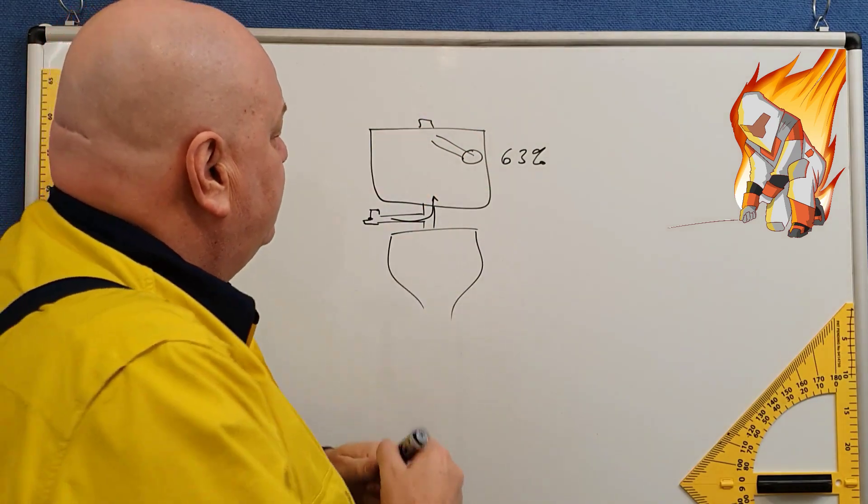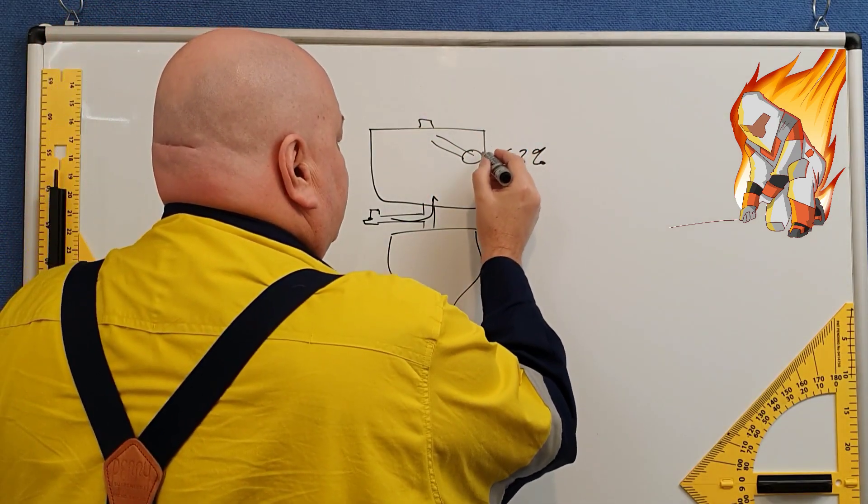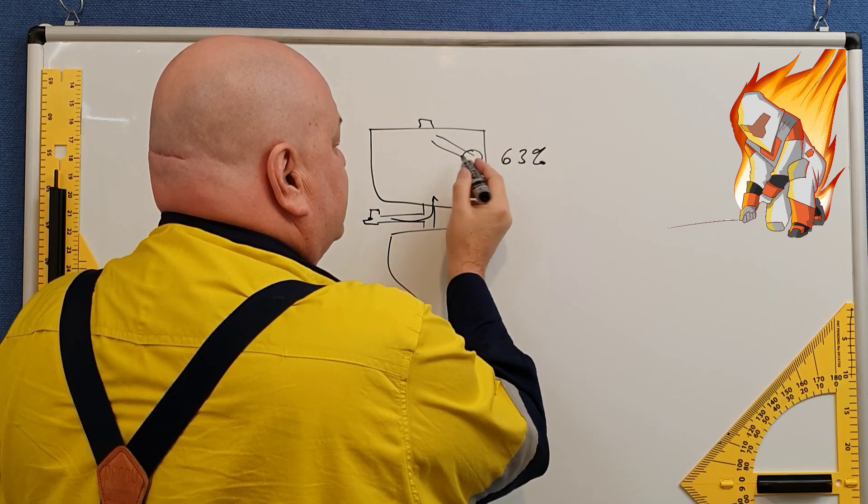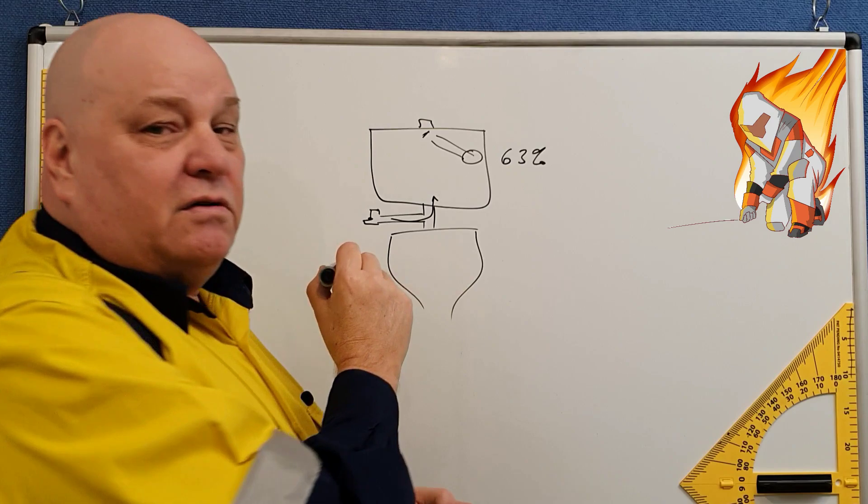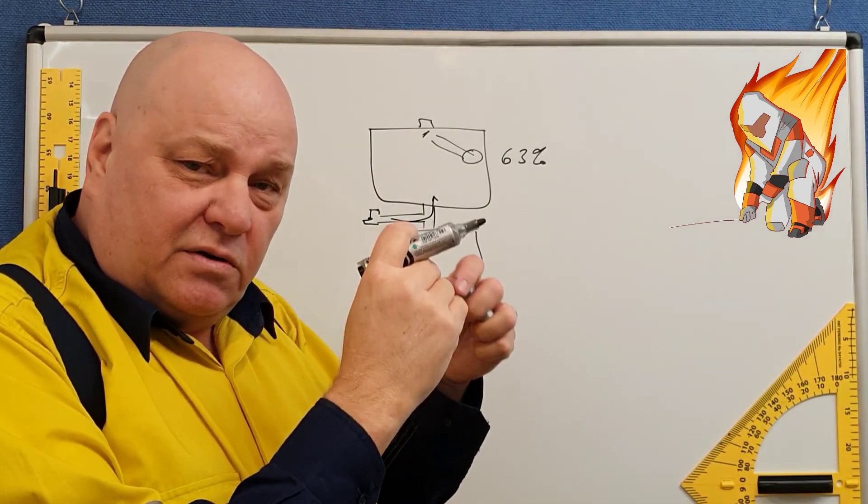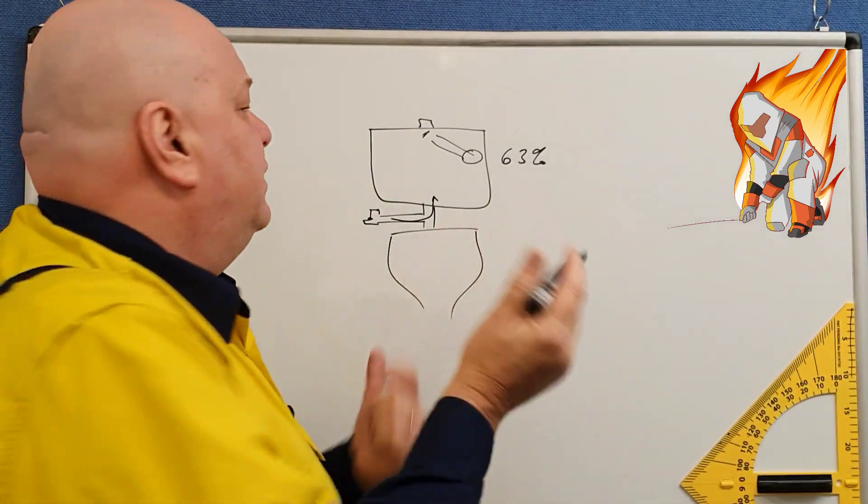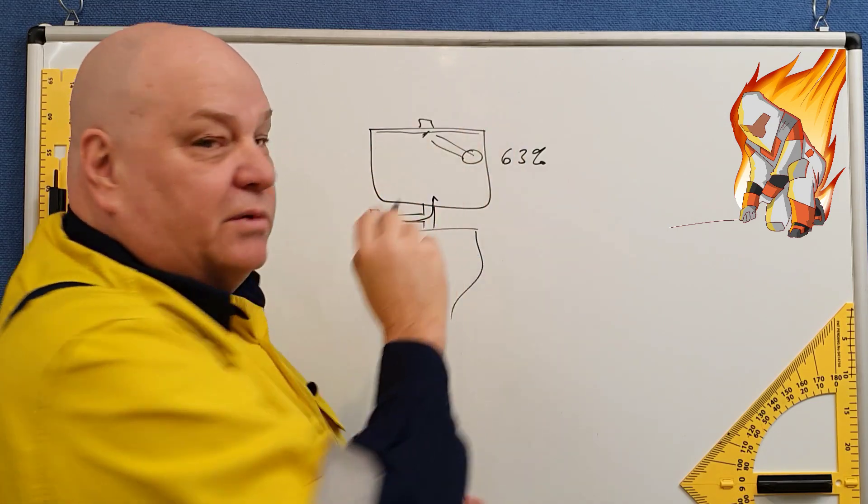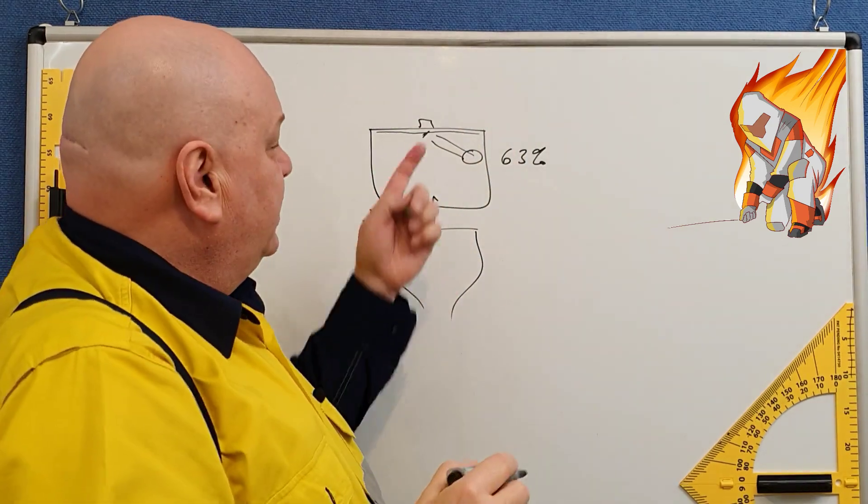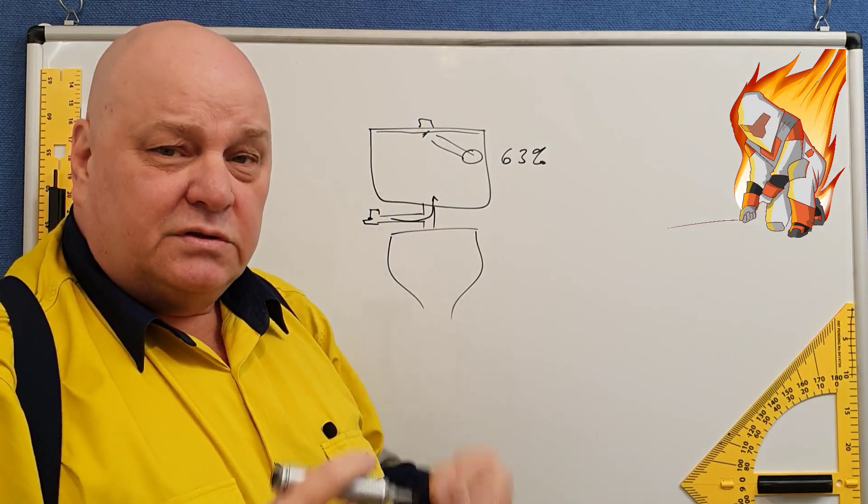Then the float starts choking it off. And so then it keeps filling and it gets slower and slower and slower. As the float rises, it closes off the valve. And the current flow gets slower and slower, until we get water nearly to the top, not quite to the top but nearly.